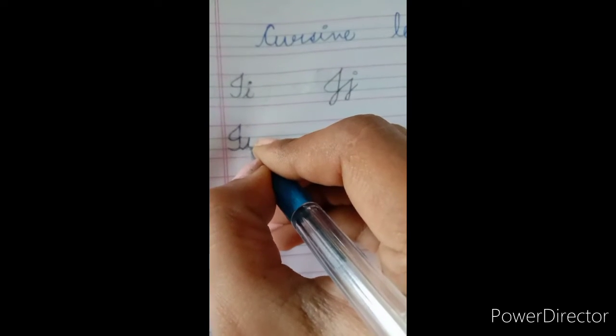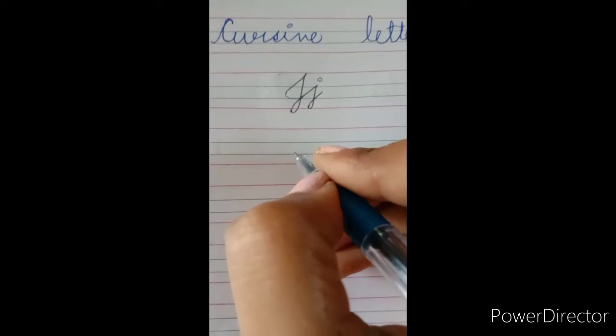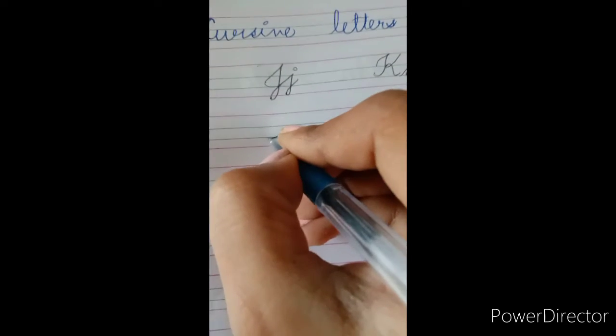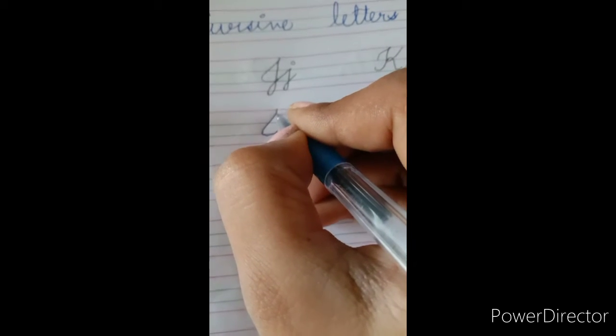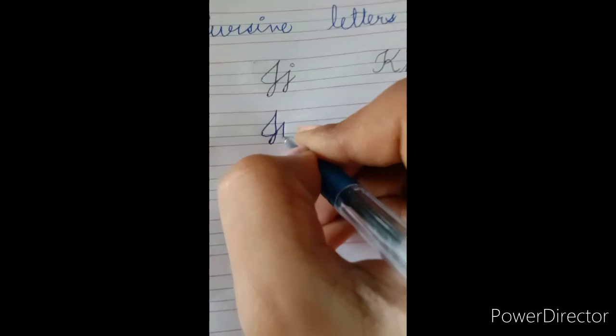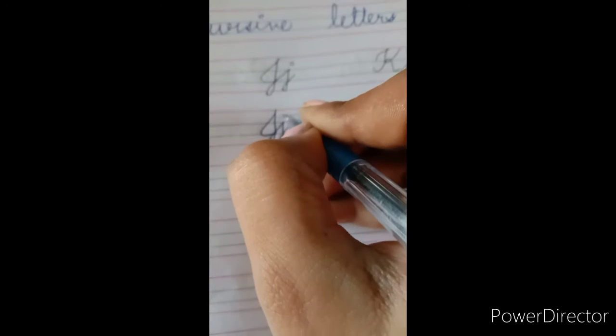J, we are going to start at the third line. This is our fourth line, J. Then small j.